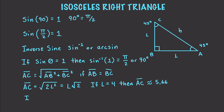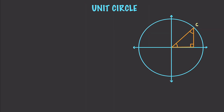And if AC equals 5.66, then L would be equal to 5.66 divided by the square root of 2, which is approximately equal to 4. Now let's move on to unit circles. A unit circle is just a circle in the center of a coordinate plane with a radius of 1. In this situation, both angles are going to be equal to 45 degrees or pi over 4.